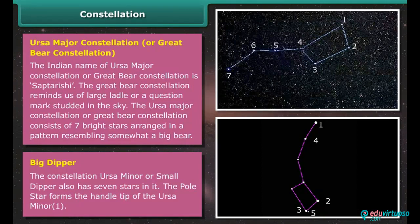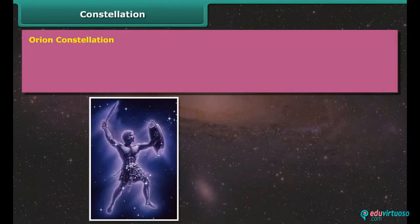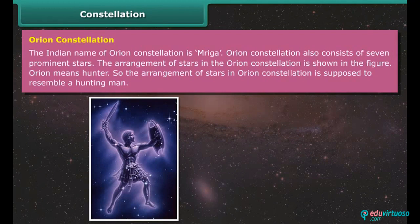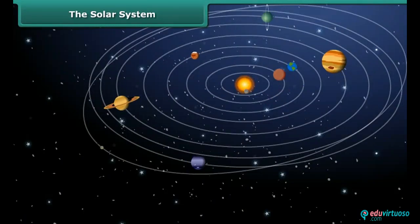Orion Constellation. The Indian name of Orion Constellation is Mriga. Orion Constellation also consists of seven prominent stars. The arrangement of stars in the Orion Constellation is shown in the figure. Orion means hunter, so the arrangement of stars in Orion Constellation is supposed to resemble a hunting man.